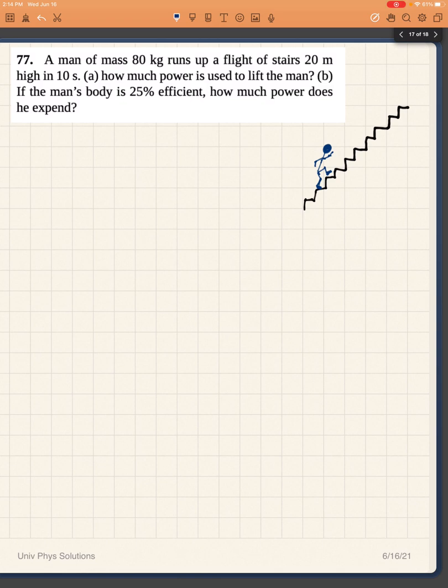A man of mass 80 kilograms runs up a flight of stairs 20 meters high in 10 seconds. How much power is used to lift the man? And if the man's body is 25% efficient, how much power does he expend? We know the mass is equal to 80 kilograms. The flight of stairs is 20 meters high, so we know this distance to be 20 meters.